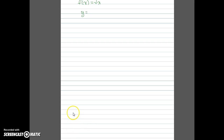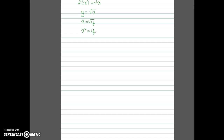The f of x notation is the same as y, so we'll replace that and then switch the x and y variables and finally solve for y. In this case, to solve for y we square both sides, so f inverse of x is equal to x squared.